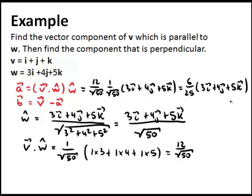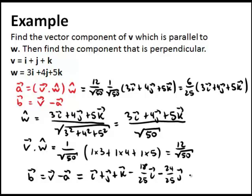To calculate b, we have to subtract a from v. So b is v minus a, that is i plus j plus k minus 18 over 25i, multiplying this out, minus 24 over 25j minus 30 over 25k. This is just this part here, this is a. If you simplify this, then this will come to 1 over 25 times 7i plus j minus 5k.